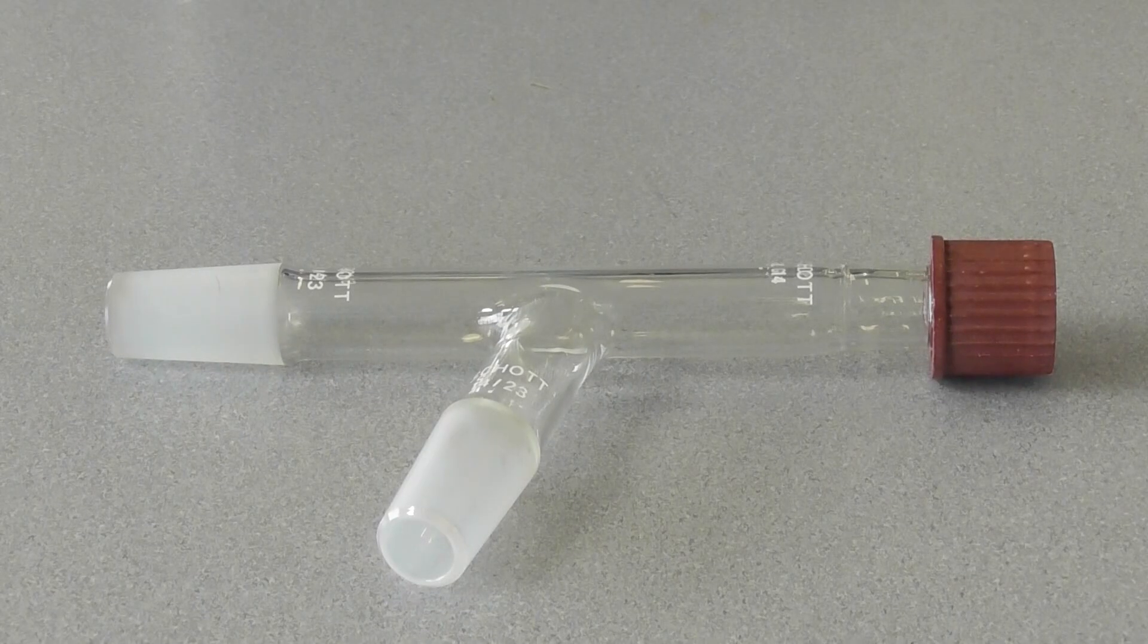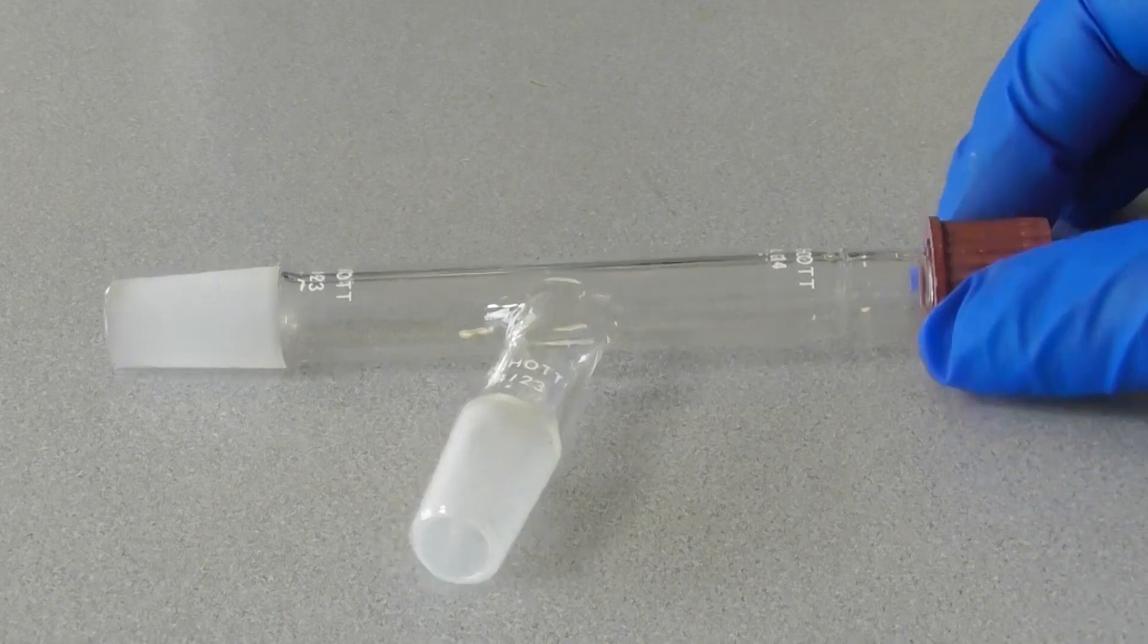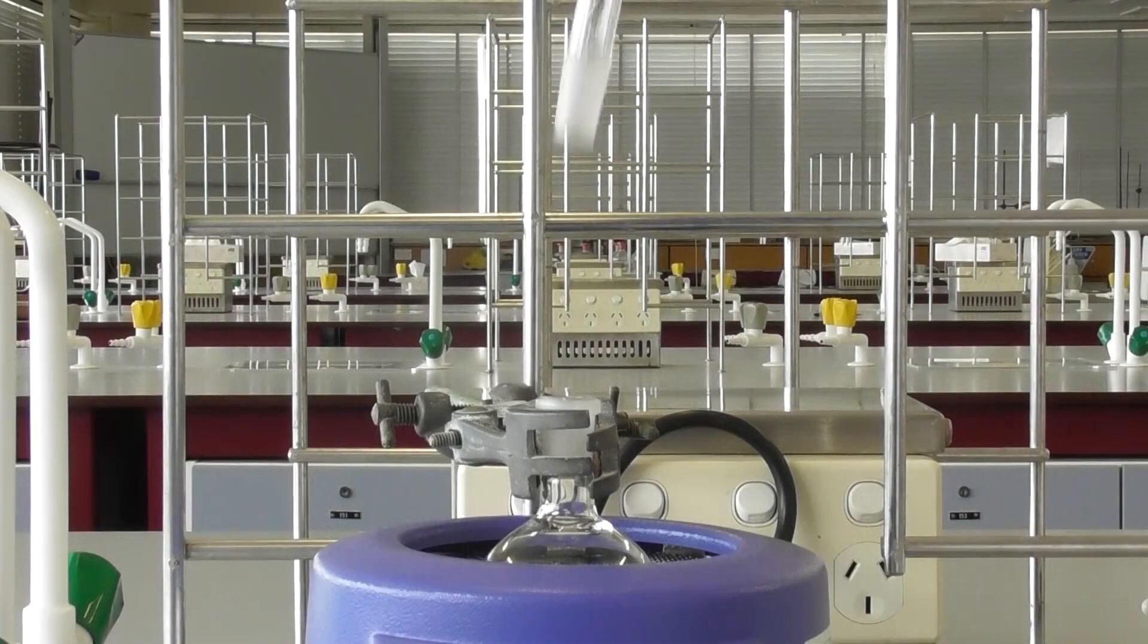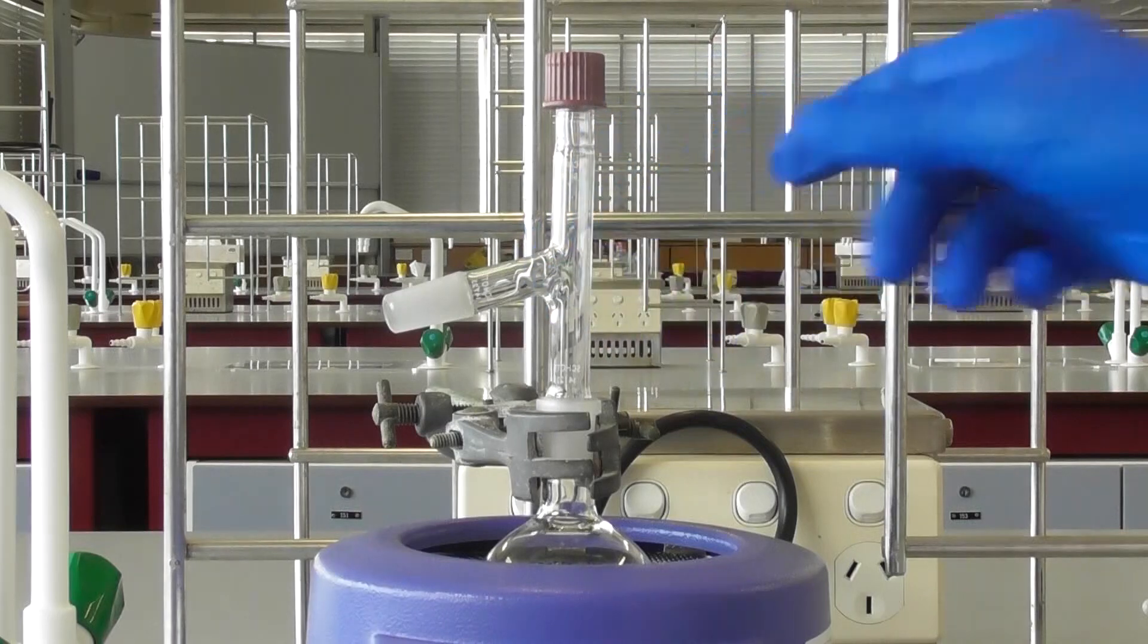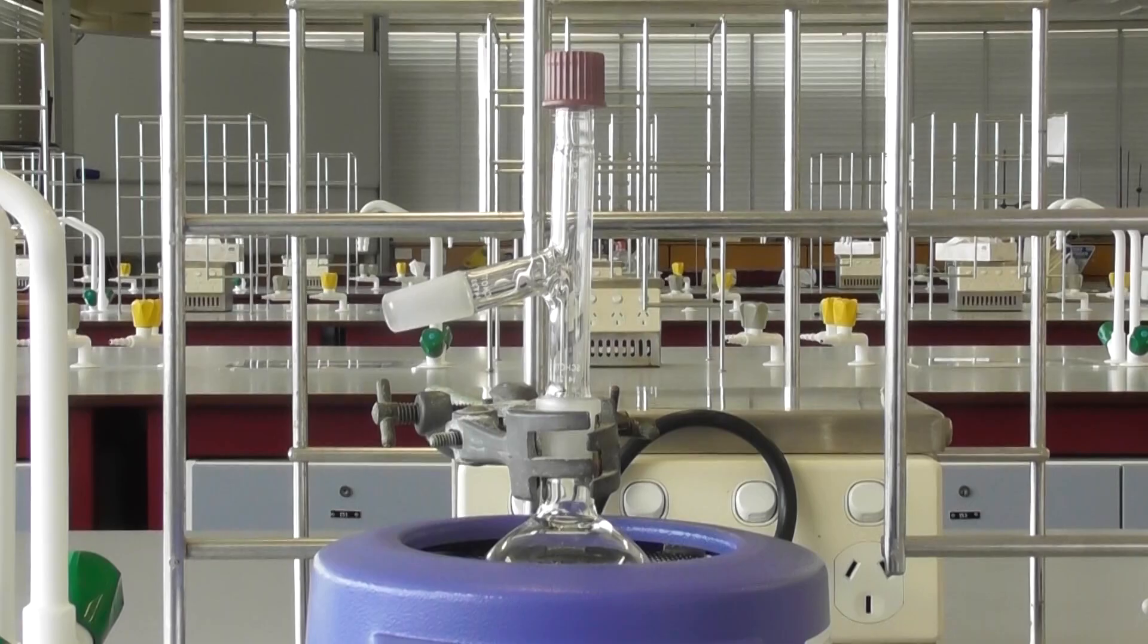This is a still head. The frosted parts are ground glass joints and need to fit snugly together to prevent the escape of gases. The still head should fit in the neck of the flask. If it is loose, an adapter may be required.